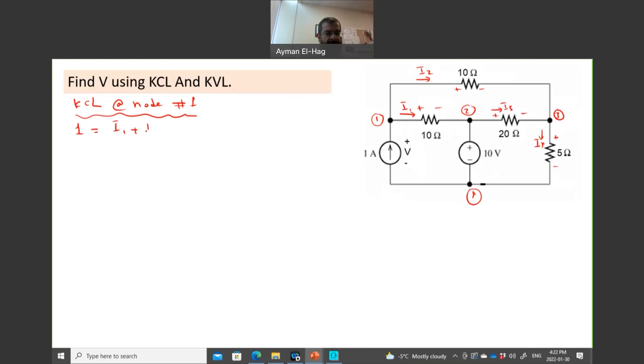So I will start KCL at node number 1. I have the 1mA enters equal to I1 plus I2. This is the first equation. Node number 2? No, because we have a voltage source. Node number 3? Yes, so we'll apply KCL at node number 3. We have I3 entering the node, plus I2 enters the node, and I4 leaves the node, is equal to I4. This is my second equation.